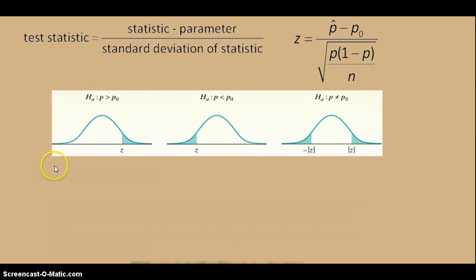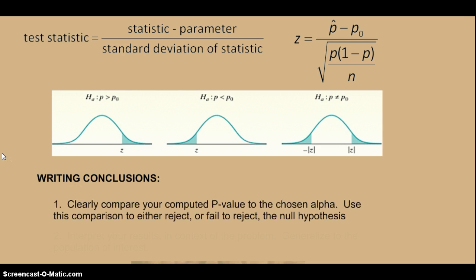So there's also some writing that has to occur here. When we write conclusions, there are two things that we have to take care of. First of all, we have to clearly compare our computed p-value to the chosen alpha, which is 10% in this case.